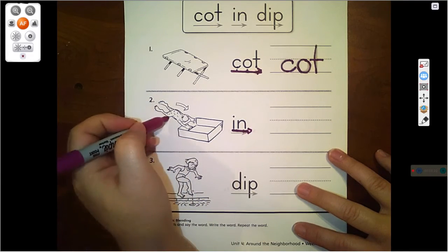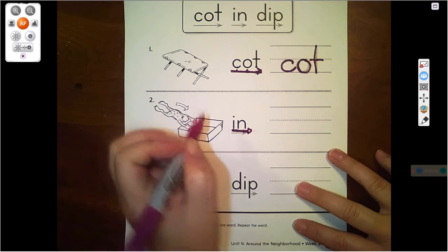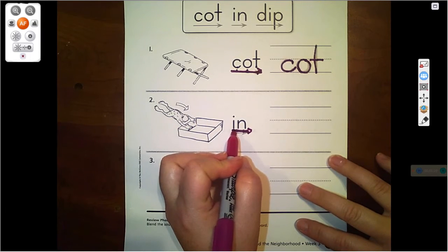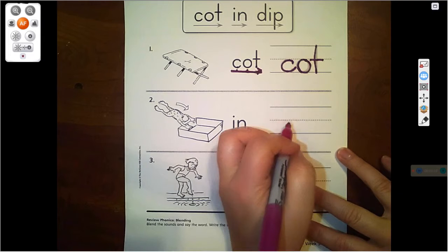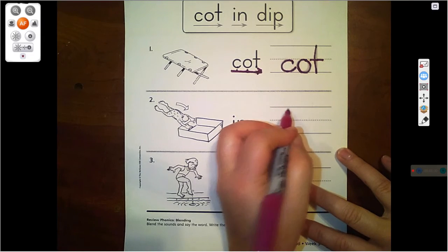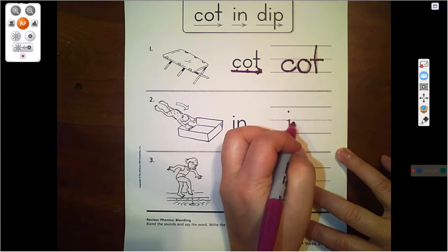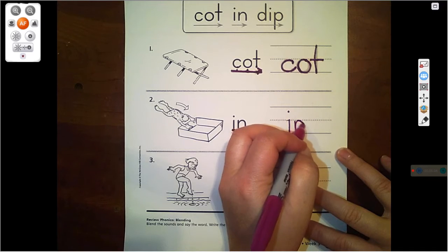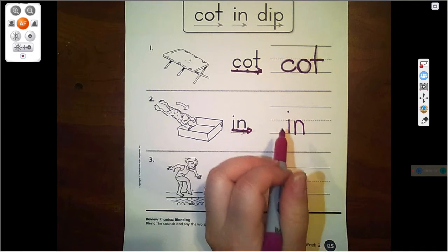The frog is going in the box. Let's write the word in. Ready? The I comes first, and then the N comes next. What is this word? In.